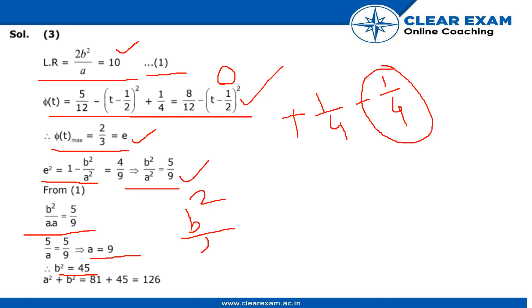So a² will be 81. So a² equals 81 and b²/a² is given as 5/9. So by substituting this value, we got b² and a² plus b² we got as 126.